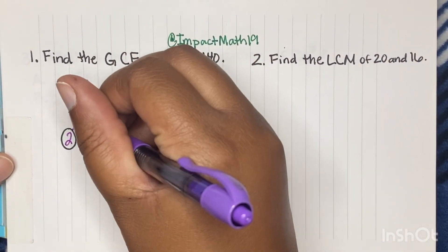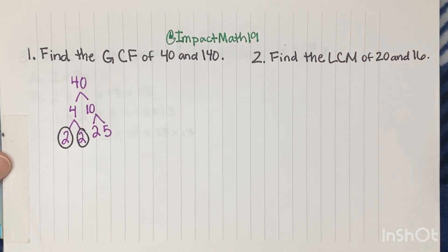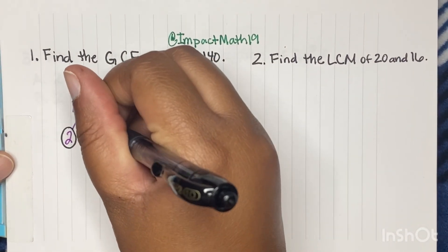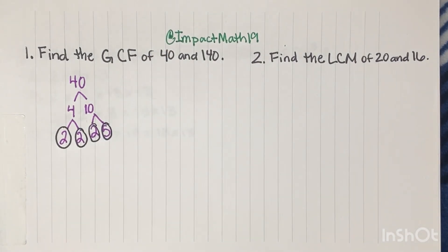And a prime is a number that only has 1 and itself as a factor. So that's why we're stopping here. What times what gives us 10? 2 times 5. So 2 and 5 are both primes.